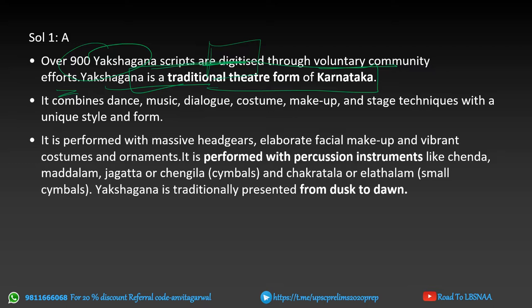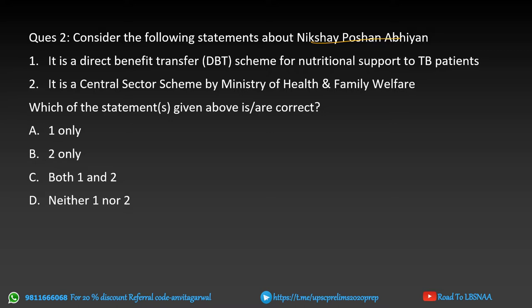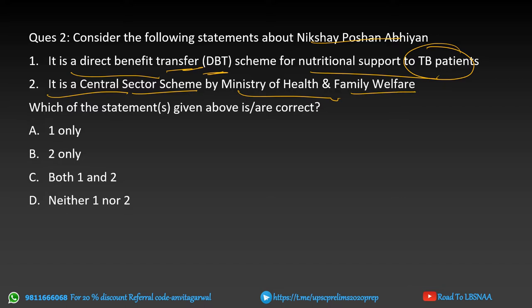Nikshay Poshan Abhiyan — what is it? Statement one: it is a Direct Benefit Transfer (DBT) scheme for nutritional support to TB patients. Statement two: it is a Central Sector Scheme by the Ministry of Health and Family Welfare. What is correct here? Read the correct/incorrect options carefully.